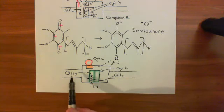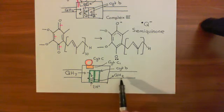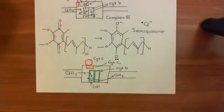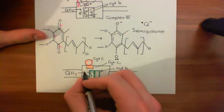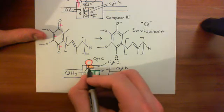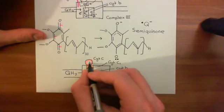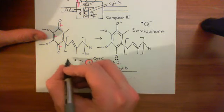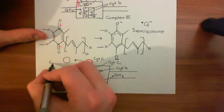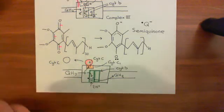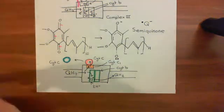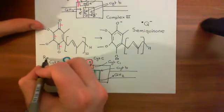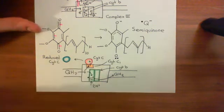This is important when considering the bigger picture: although we put in two ubiquinol molecules, we produce another one back out. So effectively we've only used one ubiquinol molecule. The second ubiquinol molecule also passes another electron onto cytochrome C1, which passes it to cytochrome C, creating another molecule of reduced cytochrome C. Cytochrome C only carries one electron.